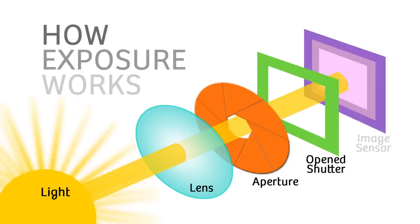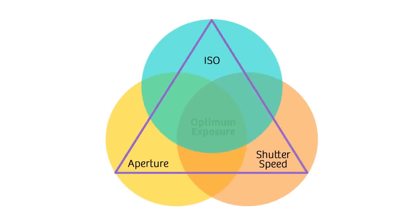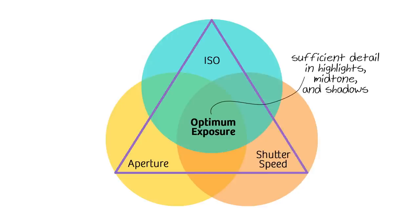In today's video, we're going to concentrate on exposure. The definition of exposure is so simple — it's the process of letting light through the lens onto the digital sensor. There really is no such thing as a perfect exposure. Exposure is a matter of taste. I like to think of exposure as optimum exposure, where there's sufficient detail in the highlights, mid-tones, and shadows.